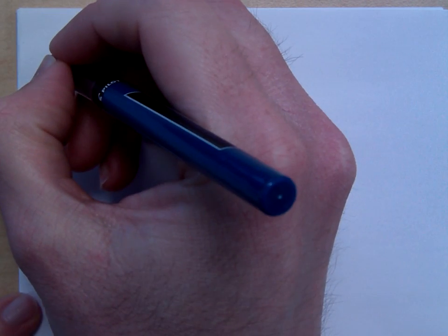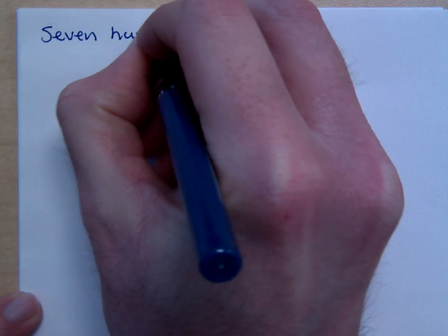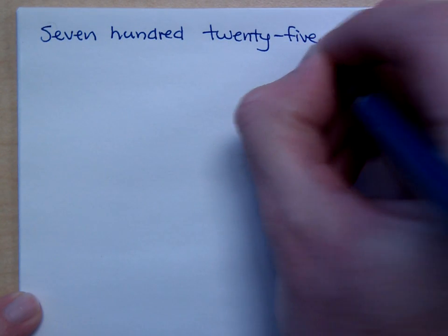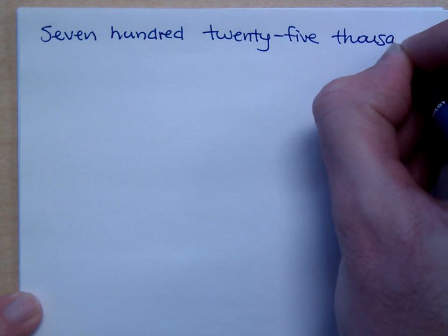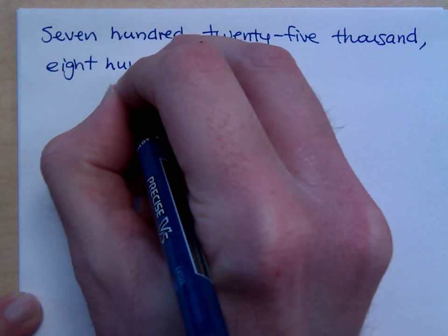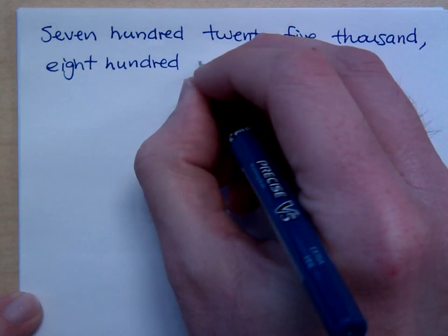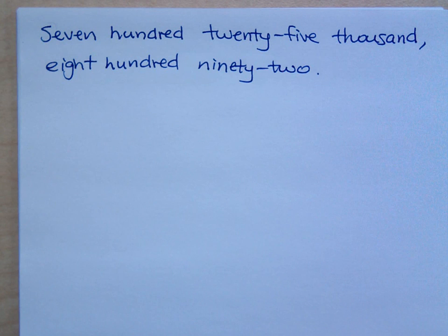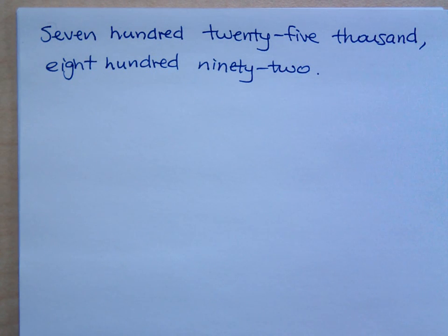All right, so I should be nice to you, right? If I were to say 725,000 — 850,000, 892. I want to take the words that I see and I want to be able to write the number for that.